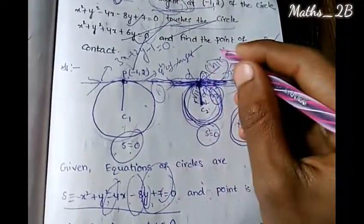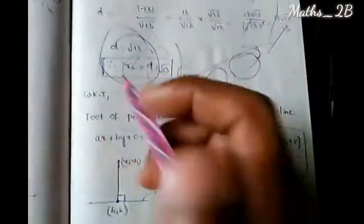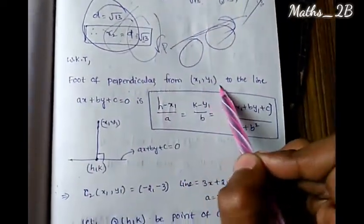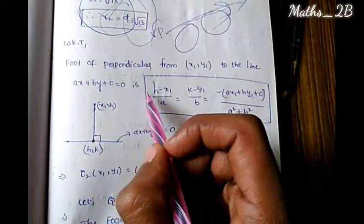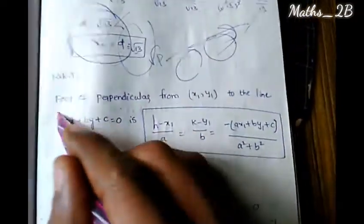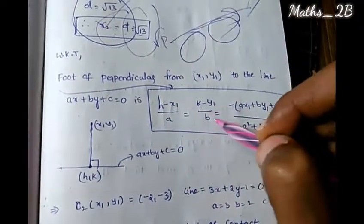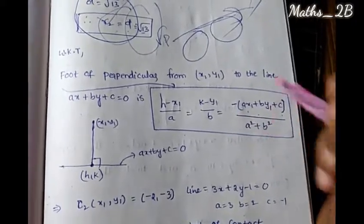The formula for the foot of perpendicular from point x1, y1 to the line ax plus by plus c equals 0 is: h minus x1 divided by a equals k minus y1 divided by b equals minus(ax1 plus by1 plus c) divided by a squared plus b squared.